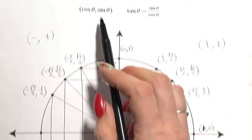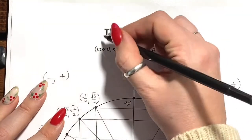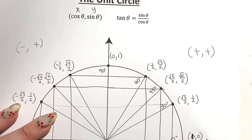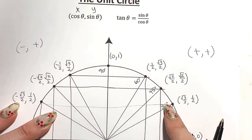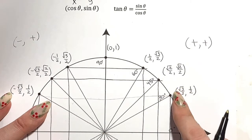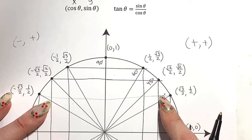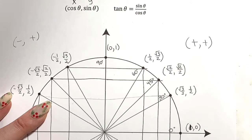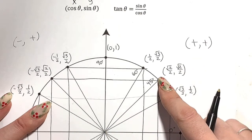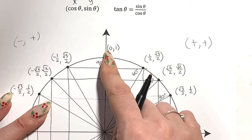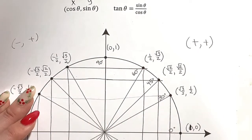Remember: cosine is like your x value and sine is like your y value. So if I want cosine of 30 degrees, I go to the 30-degree line and take the x value — that's √3/2. Or if I want sine of 45 degrees, I go to 45 degrees and take the y value — that's √2/2. You can also find values at 90 degrees and all the way around.